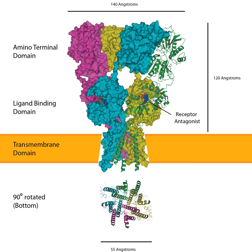Decanoic acid acts as a non-competitive AMPA receptor antagonist at therapeutically relevant concentrations, in a voltage- and subunit-dependent manner, and this is sufficient to explain its anti-seizure effects. This direct inhibition of excitatory neurotransmission by decanoic acid in the brain contributes to the anticonvulsant effect of the medium-chain triglyceride ketogenic diet. Decanoic acid and the AMPA receptor antagonist drug perampanel act at separate sites on the AMPA receptor, and so it is possible that they have a cooperative effect, suggesting that perampanel and the ketogenic diet could be synergistic.